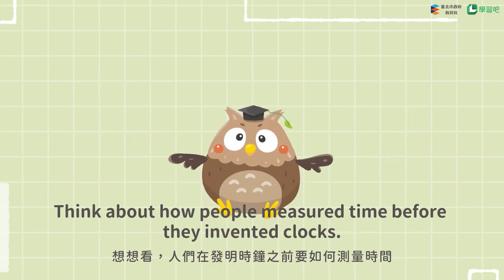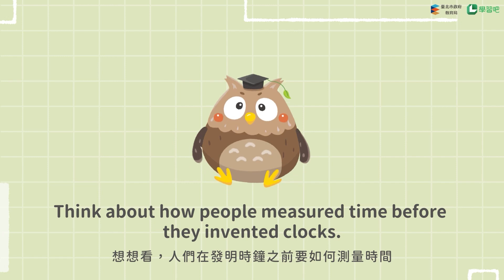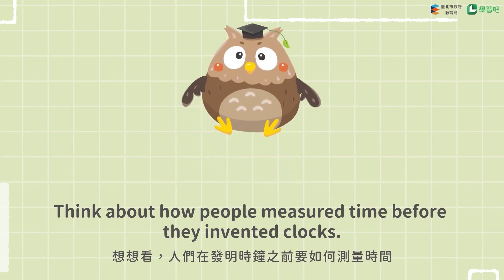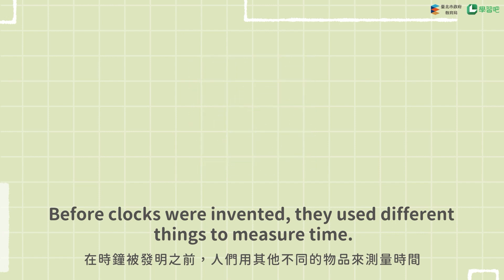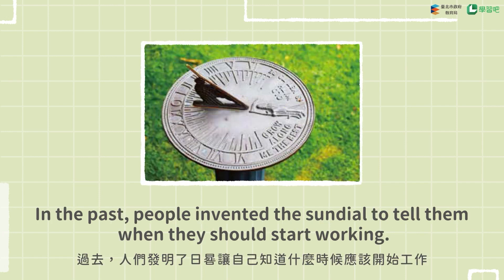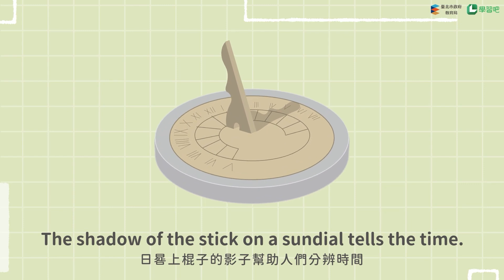Think about how people measured time before they invented clocks. Before clocks were invented, they used different things to measure time. In the past, people invented the sundial to tell them when they should start working. The shadow of the stick on the sundial tells the time.